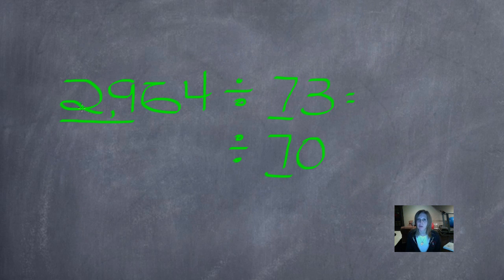We need a number close to 29 that 7 will divide evenly into. And we actually just used that in the last problem. We know 28 is divisible by 7 because 7 times 4 is 28.